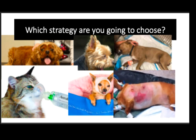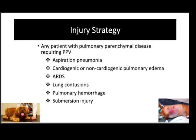Finally, a five-year-old Dachshund with severe pulmonary contusions from a bite wound — this patient will benefit from the injury strategy. We're going to start with the injury strategy because it is by far the most common strategy in critical care medicine. The rule of thumb is that any patient with pulmonary parenchymal disease that needs mechanical ventilation should be ventilated using the injury strategy.